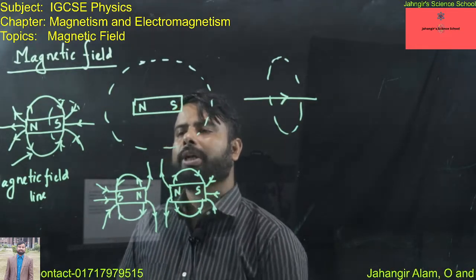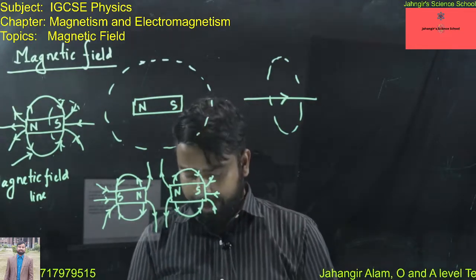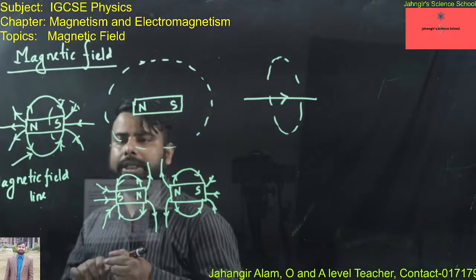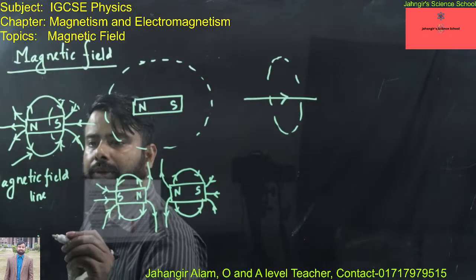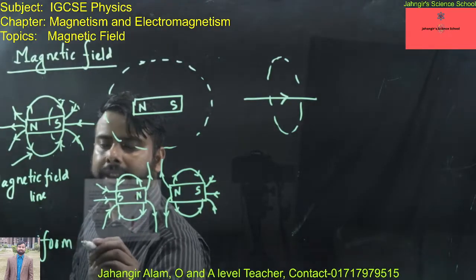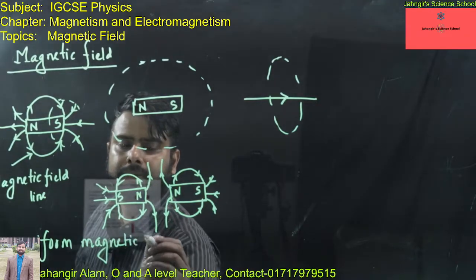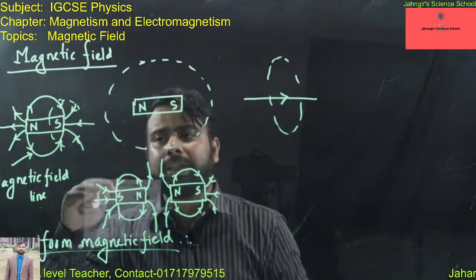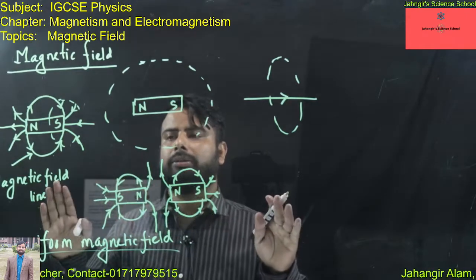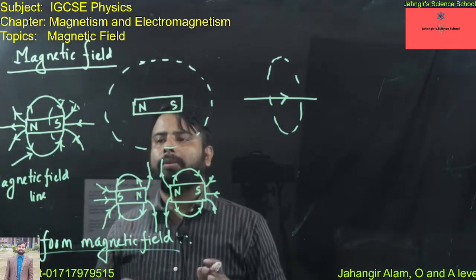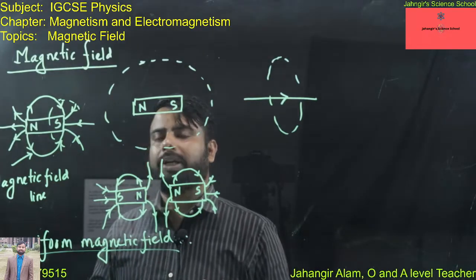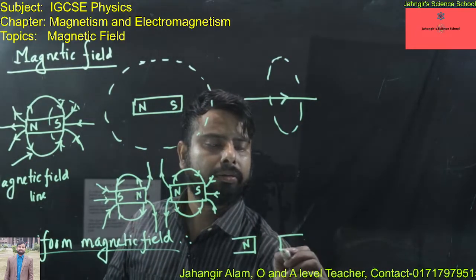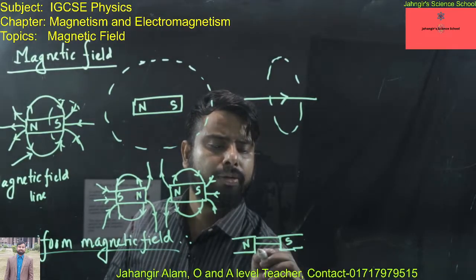A uniform magnetic field exerts a constant force over a region. Such a field exists when two opposite poles — North and South — are placed close to each other, producing a uniform magnetic field between them.